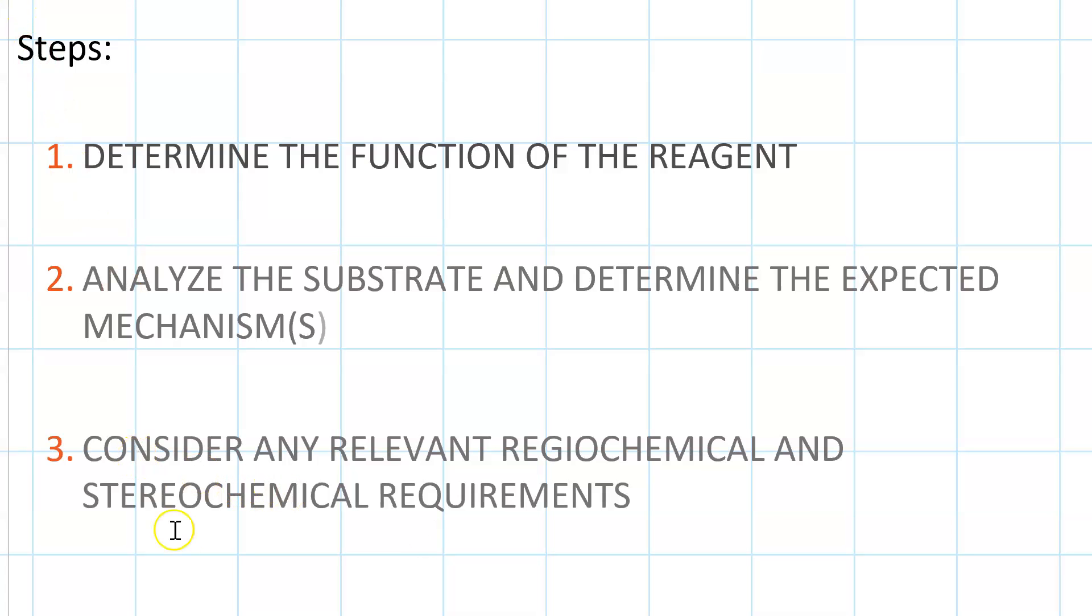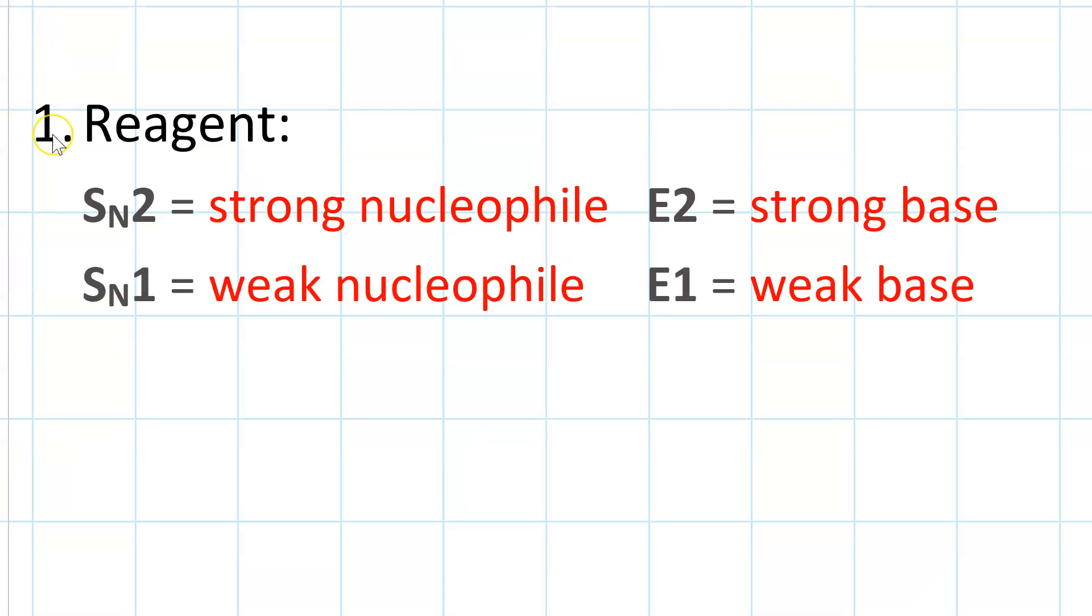Step three is to consider any relevant regiochemical, that is, is it Zaitsev or is it Hoffman, and stereochemical R S E Z cis trans things that are going on. When you're looking at the reagent, if it's a strong nucleophile, that favors SN2. A strong base favors E2.